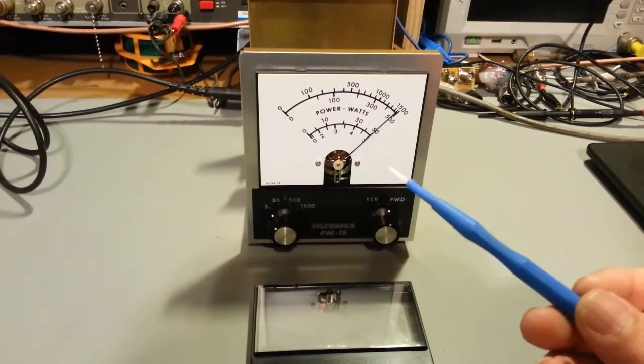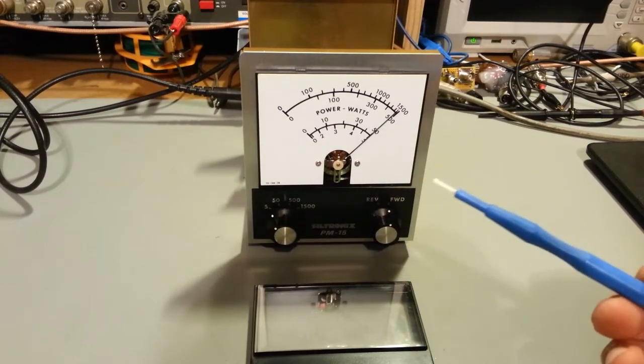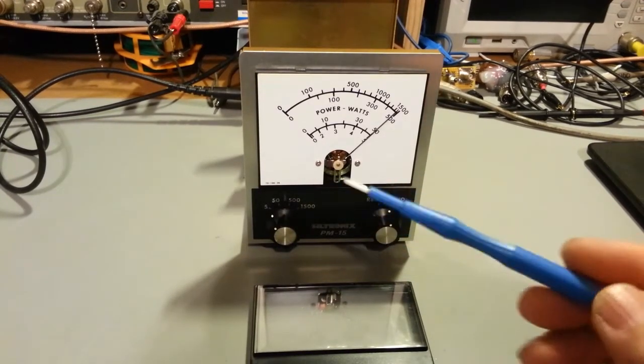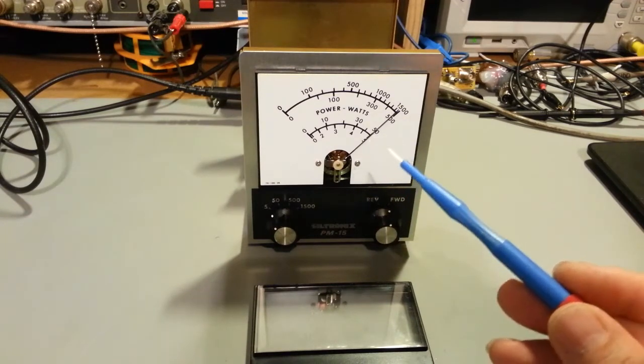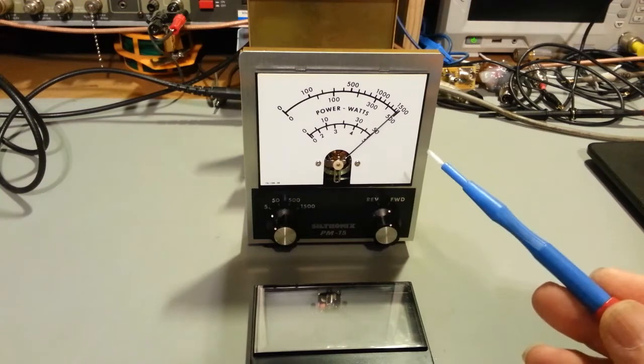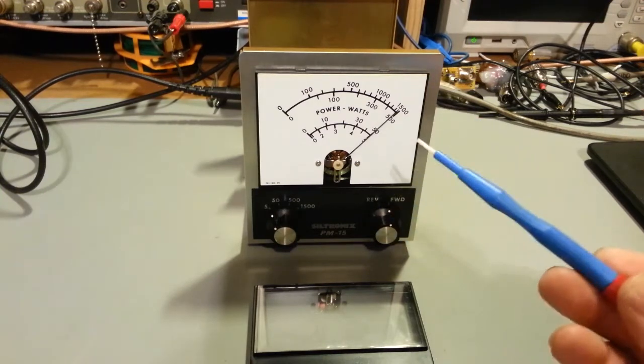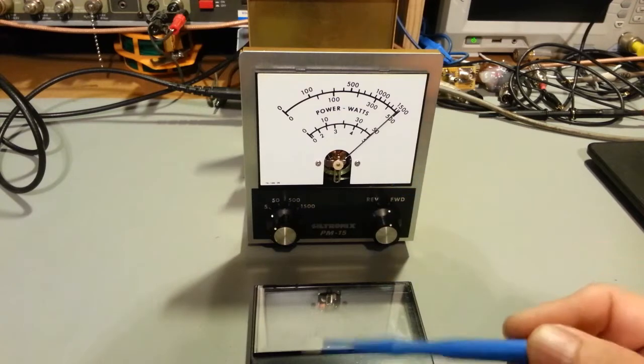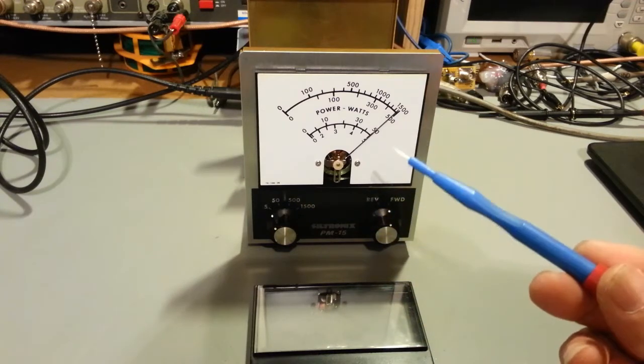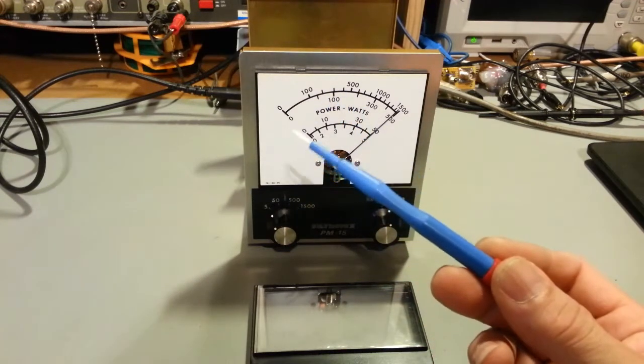But this one apparently wasn't sticking because I could get the needle to move. I could almost get it calibrated to like 4 watts, or 5 watts, whatever I was trying, the 50 watts or the 500 or 1500 watt scale. I could get the needle almost there and then I'd turn the power off and back on and it would be in a completely different spot. And then the needle wouldn't come down to zero.